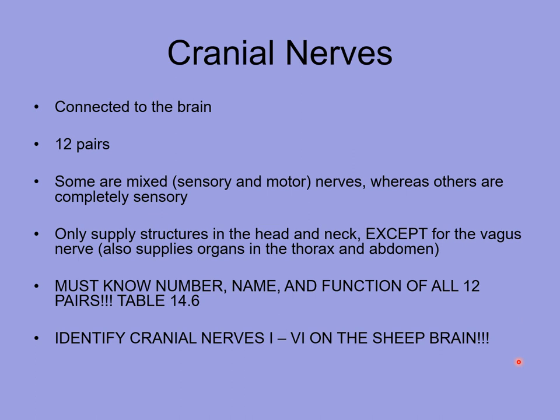The cranial nerves — there are 12 pairs of these nerves connected to the brain. They are considered part of the peripheral nervous system because they are not the brain itself, but they do connect to it. Some of these are mixed nerves, meaning they contain both sensory and motor neurons, while others are purely sensory. They innervate different structures of the head and neck, except for one — the vagus nerve — which also supplies organs of the thorax and abdominal region.